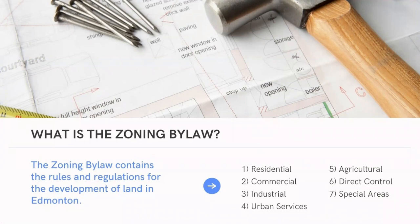In Edmonton, the zones are classified as follows: residential, commercial, industrial, urban services, agricultural and reserve, direct control, and special areas such as the ICE District.